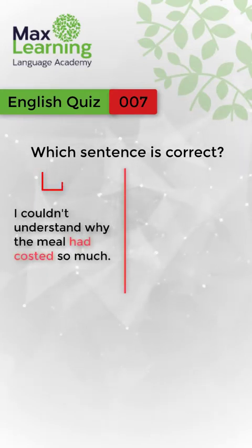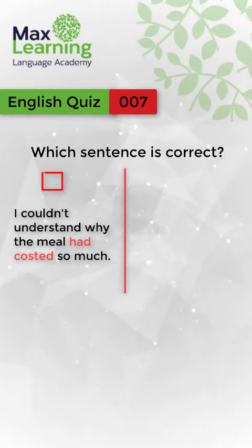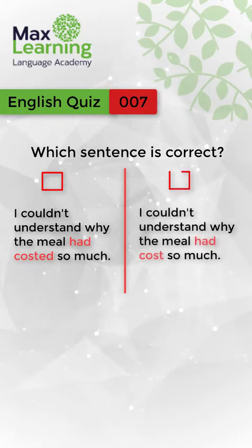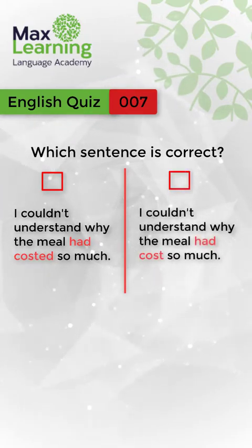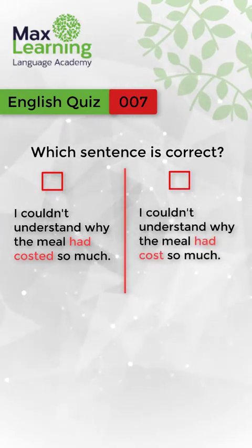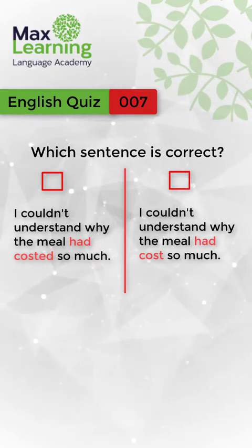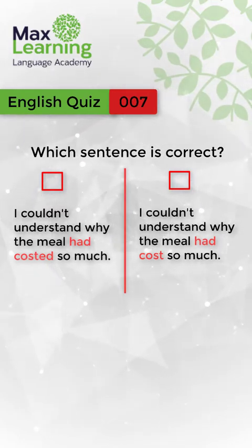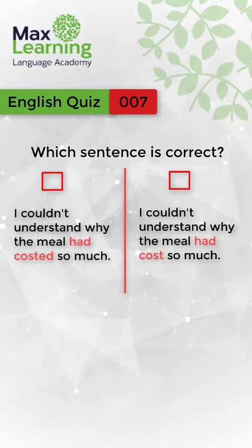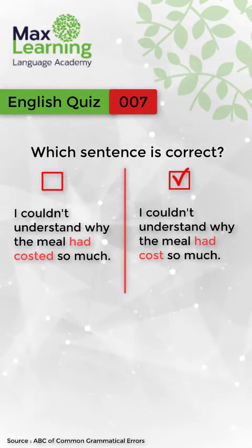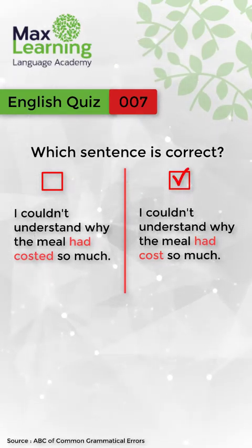Which sentence is correct? Option A: I couldn't understand why the meal had cost so much. Option B: I couldn't understand why the meal had costed so much. I'll give you some time to think. The correct answer is: I couldn't understand why the meal had cost so much.